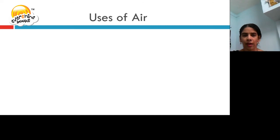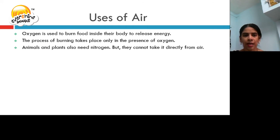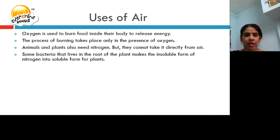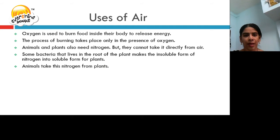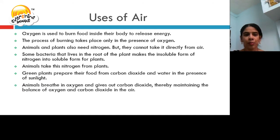Oxygen is used to burn food inside the body to release energy. The process of burning takes place only in the presence of oxygen. Animals and plants need nitrogen, but they cannot take it directly from the air. Some bacteria that live in the roots of plants make the insoluble form of nitrogen into soluble form for plants. Animals take this nitrogen from the plants. Green plants prepare their food from carbon dioxide and water in the presence of sunlight. Animals breathe in oxygen and give out carbon dioxide, thereby maintaining the balance of oxygen and carbon dioxide in the air.